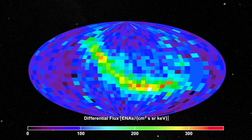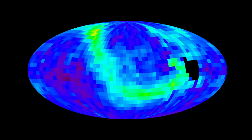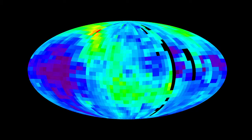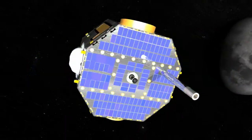IBEX can also tell how energetic each atom was and, much like filtering light to show one color, create an all-sky map of each energy level. Viewing the sky this way can reveal some startling things about the edge of the solar system.